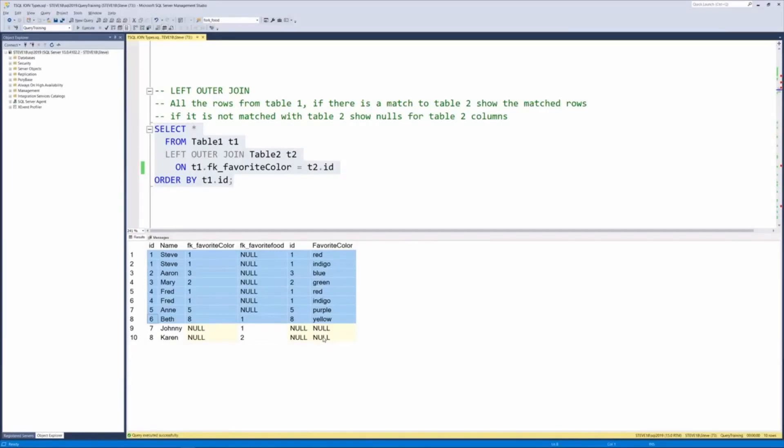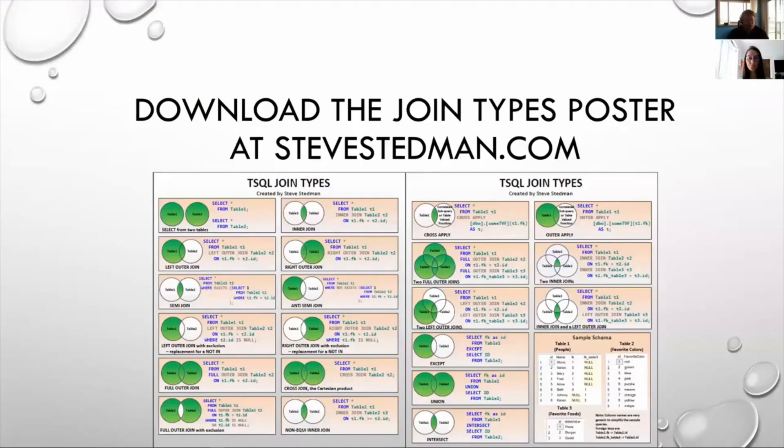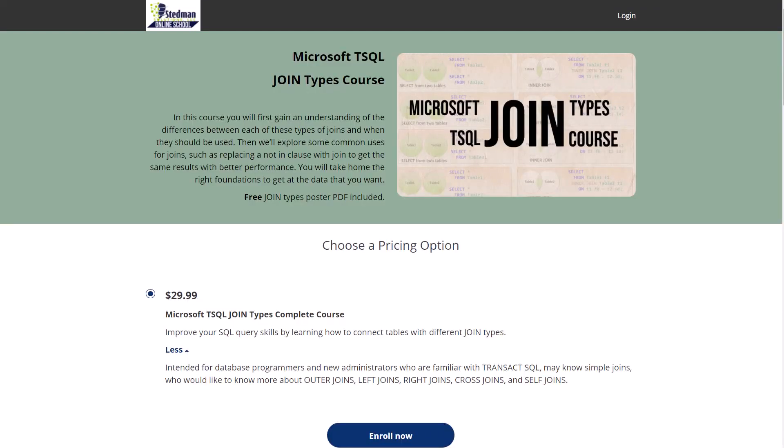Where the left outer join would allow them to be included. Also, just a reminder, you can download the join types poster at stevesedman.com. This is a poster I created a few years ago that just sort of shows how all the different joins that we're going to be covering through this presentation are done. It's handy to print out and keep on your cube wall.